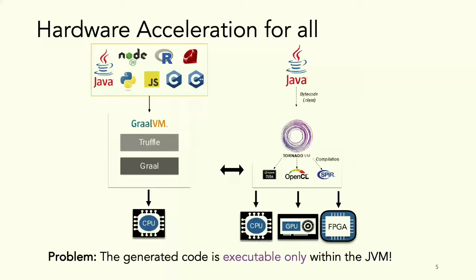We take Java bytecodes and specialize them. Our compiler is a superset of the Graal compiler. We emit code based on three different backends: PTX assembly for NVIDIA GPUs, OpenCL which is portable across different devices, and lately SPIR-V, which is a binary format.